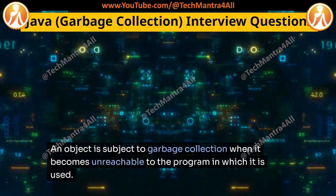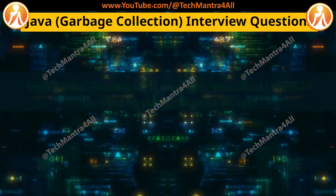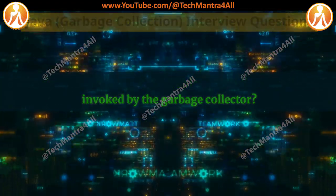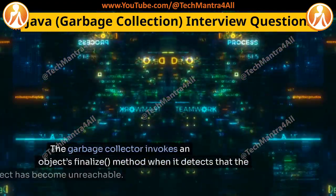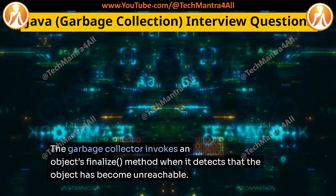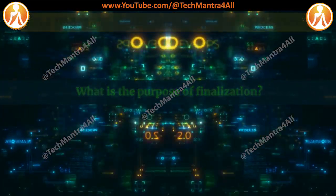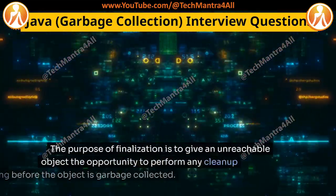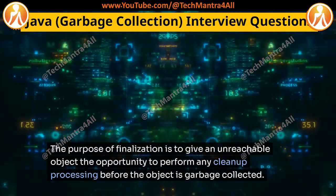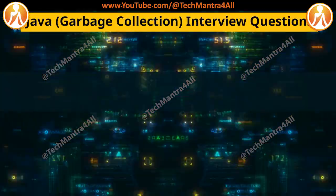When is an object subject to garbage collection? An object is subject to garbage collection when it becomes unreachable to the program in which it is used. Under what conditions is an object's finalize method invoked by the garbage collector? The garbage collector invokes an object's finalize method when it detects that the object has become unreachable. The purpose of finalization is to give an unreachable object the opportunity to perform any cleanup processing before the object is garbage collected.